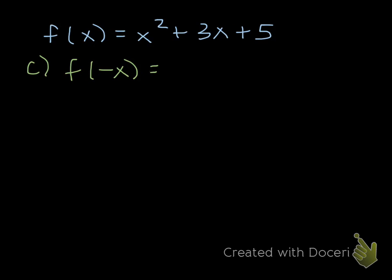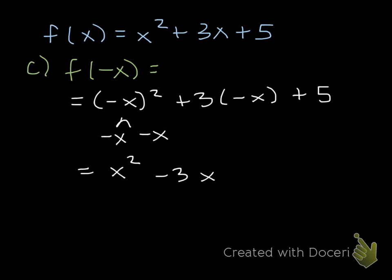Lastly, we're evaluating the function at a negative x. So I have the quantity of negative x squared plus 3 times negative x plus 5. When I have a negative x squared, that means negative x times negative x. So this will give me a positive x squared minus 3x plus 5. And this is as far as I go. I can't combine any of those terms.